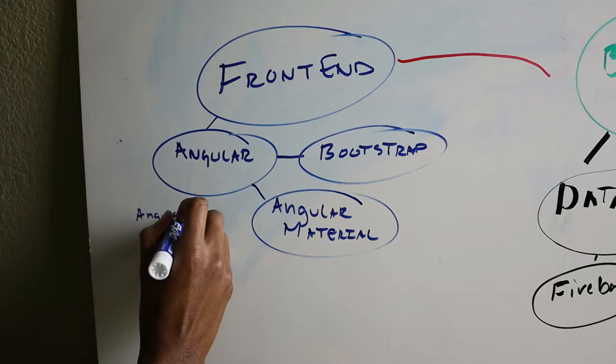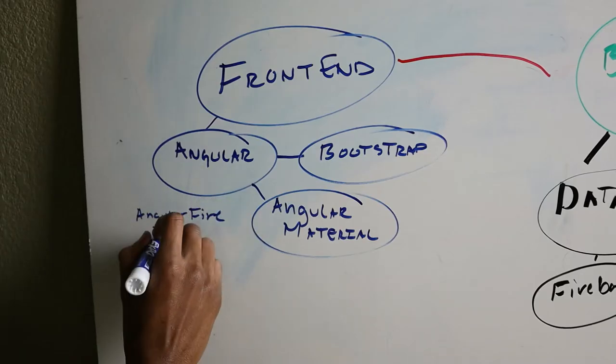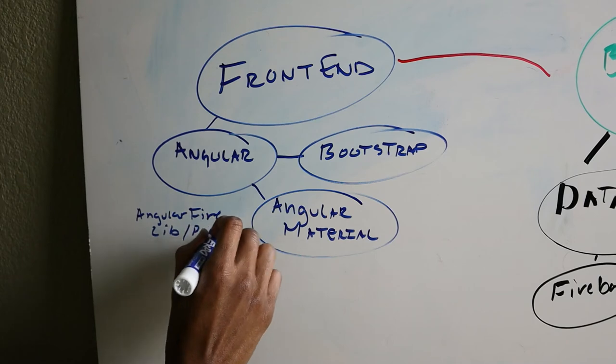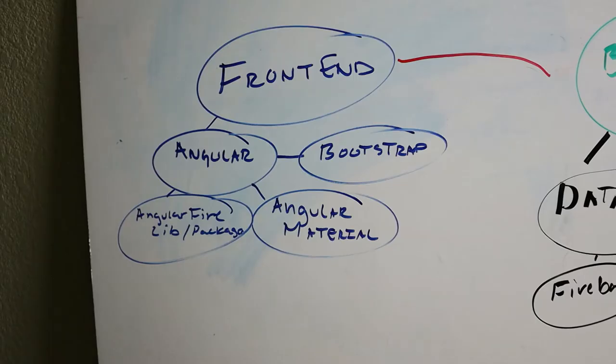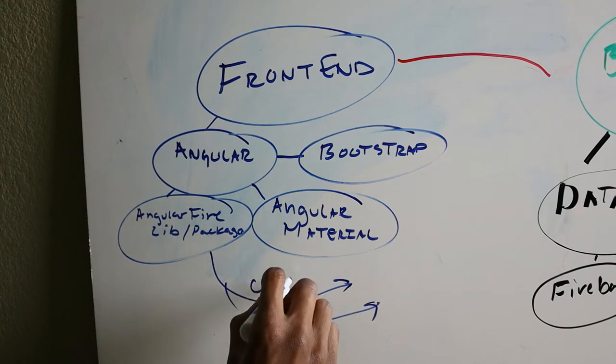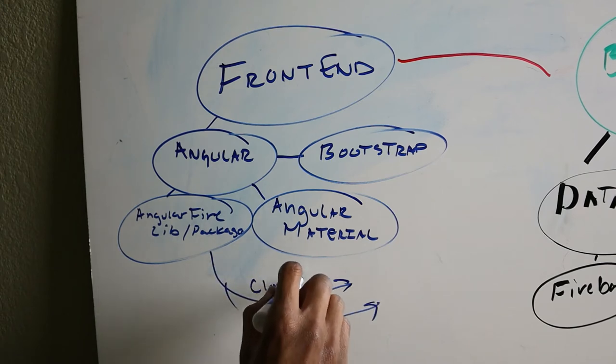Going back to it — we know we're going with Firebase for the backend. So we're going to make sure the front end can communicate with the backend. I've already been using this package and it's called AngularFire. I really think this makes it super easy to implement this stuff. I just use this package to communicate with Firestore and also the Cloud Functions.